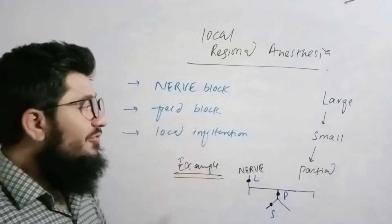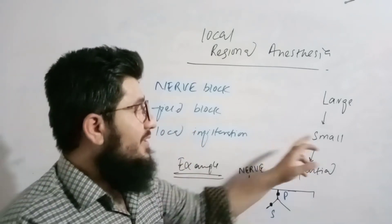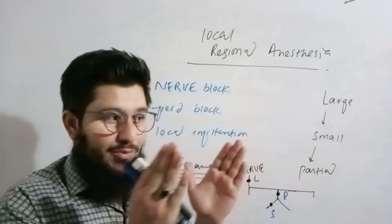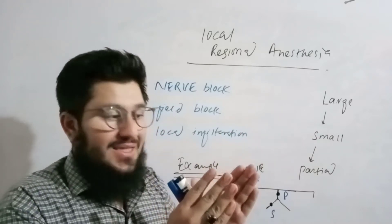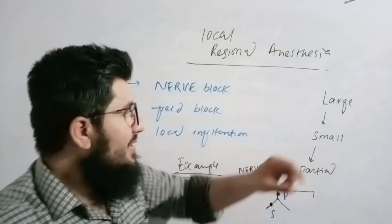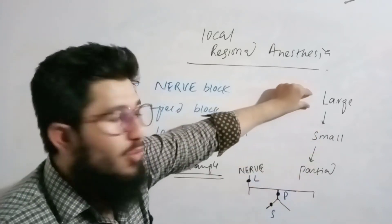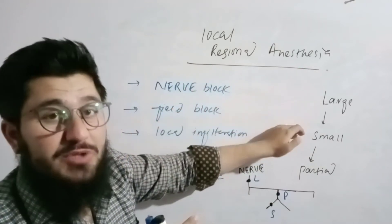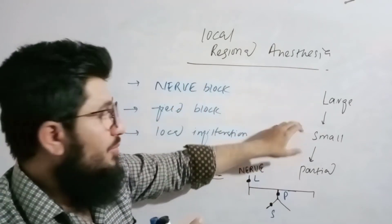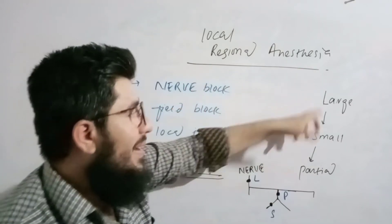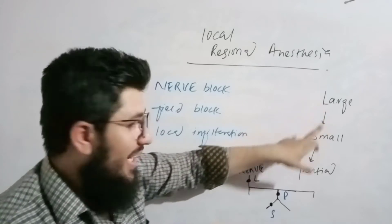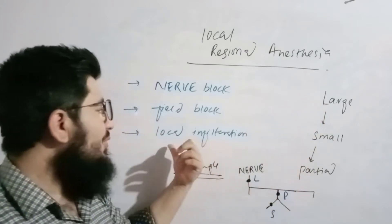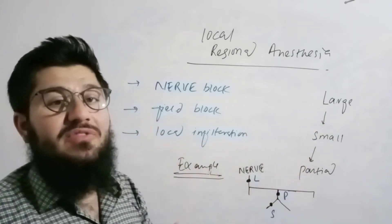Then we have field block — for this we are working on a smaller portion. So first we have the large portion, then we have the small portion, which is actually a part of that large portion. Then there is the partial of the small portion — for that we use local infiltration.